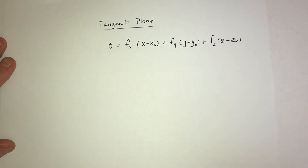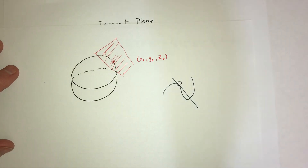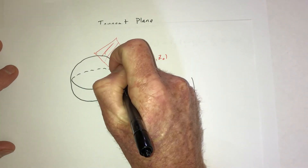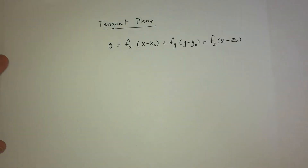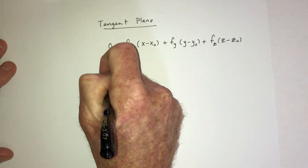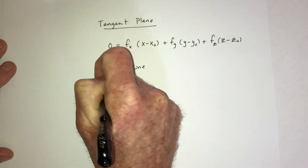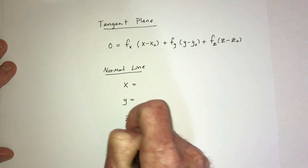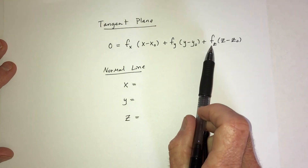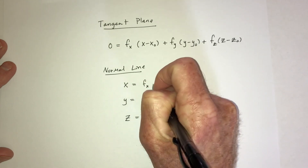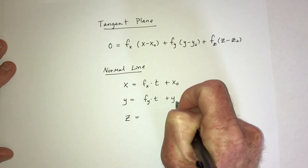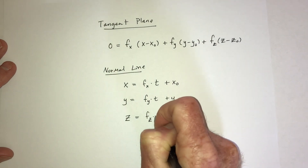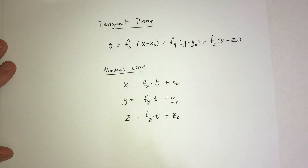For the normal line, 'normal' means perpendicular — it's the line perpendicular to the tangent plane at that point. The equations are in parametric form. You take the derivative with respect to x times t plus x-naught, the derivative with respect to y times t plus y-naught, and the derivative with respect to z times t plus z-naught. You already have everything you need from the tangent plane calculation.